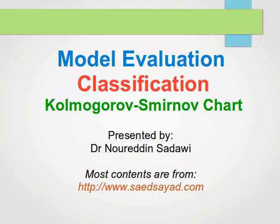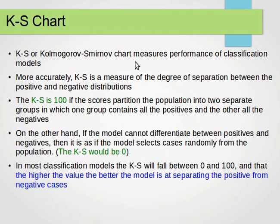Welcome again to my model evaluation tutorials. I'm still covering classification model evaluation and in this video I'm going to explain what a KS chart, or Kolmogorov-Smirnov chart, is. The KS chart measures the performance of classification models — specifically, it's a measure of the degree of separation between the positive and negative distributions.